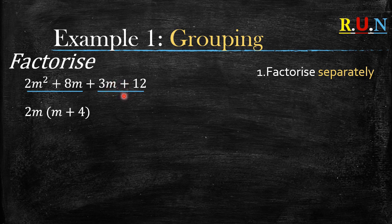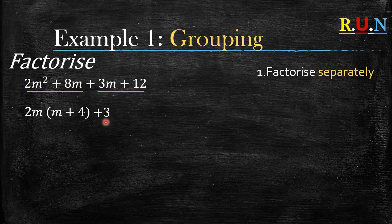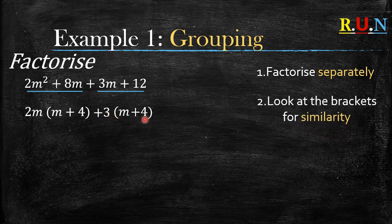Now factorize the second pair separately. The highest common factor of three and twelve is three. When we look at the letter part, m only appears on one side, so we only use three as the common factor. 3m divided by three gives m, and twelve divided by three gives positive four.